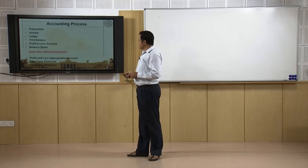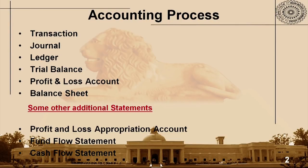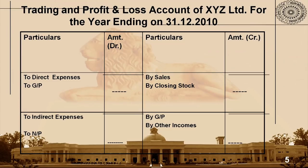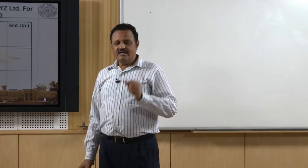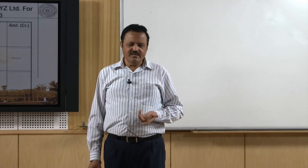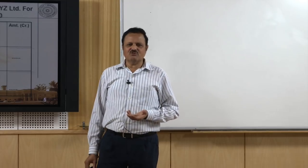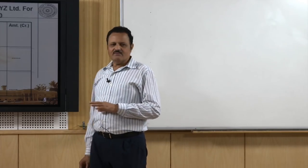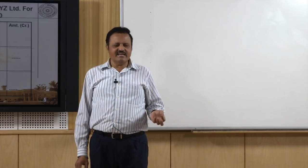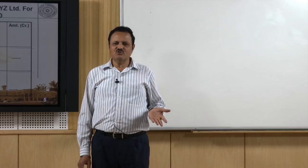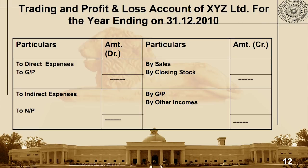I will take you to the format of the profit and loss account. This is the format — trading and profit and loss account of XYZ Limited for the year ending on 31st December 2010. It can be any date; as I told you about the accounting period concept, it can be 31st December, 30th June, 30th September — any period of 12 months. Business is free to choose that period; 12 months can begin on any date and that is not necessarily a calendar year.